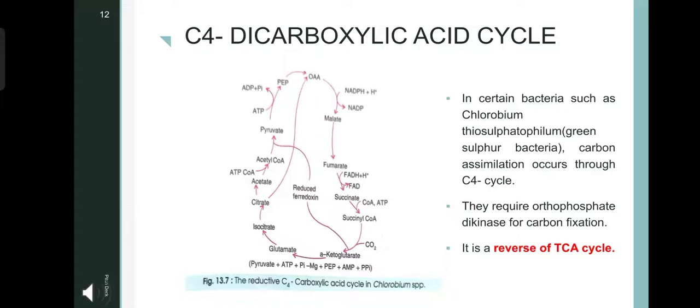In this, the oxaloacetic acid is converted into malate, then fumarate, which is then converted into succinyl coenzyme A, alpha-ketoglutarate, glutamate, isocitrate, citrate, acetate, acetyl coenzyme A, pyruvate, and finally back into oxaloacetic acid. And during this process, ATP is produced and NADPH is reduced.